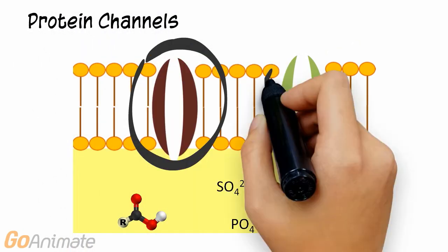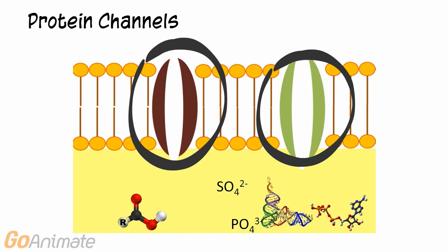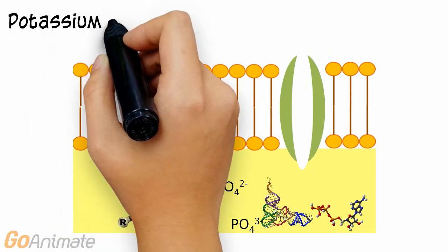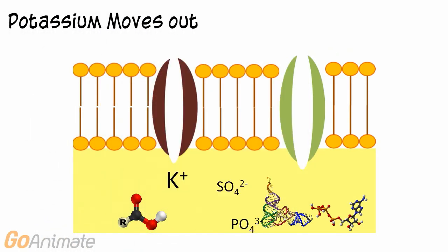There are protein channels in the cell membrane. Potassium channels allow for potassium to move along its gradient from the inside to outside of the cell. This also works to make the inside of the cell more negative by removing positive charges.